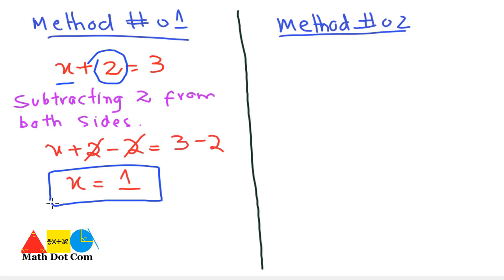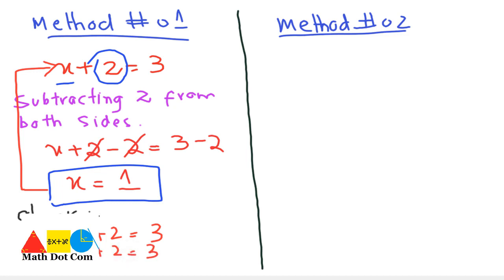To check whether this value of x is correct, we substitute it back into the equation. The equation was x plus 2 equals to 3. Putting x equals 1: 1 plus 2 equals 3, and 3 equals 3. Left hand side equals right hand side. This proves the root of the equation is correct. The root of this equation is x equals 1.